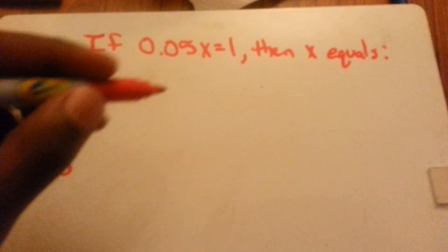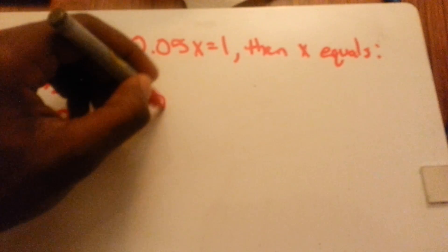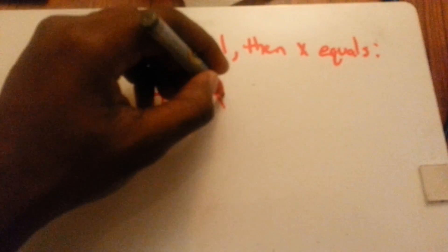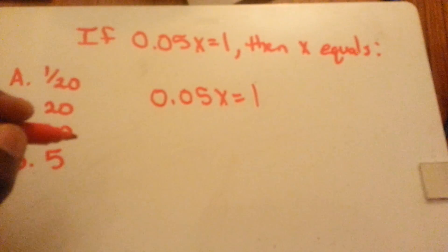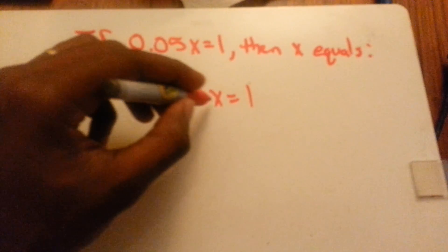For this problem, we need to solve for x to find the answer. We have 0.05x equals 1. To solve for x, we need to divide both sides by 0.05.